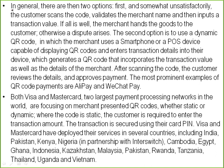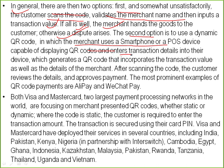In general, there are two options. In the first option, the customer scans the code, validates the merchant's name, and inputs a transaction value. If all is well, the merchant hands goods to the customer; otherwise, a dispute arises if the notification is not sent. The second option is to use a dynamic QR code, in which the merchant uses a smartphone or POS device capable of displaying QR codes, enters transaction details into the device, which generates a QR code that incorporates a transaction value as well as the details of the merchant. After scanning the code, the customer reviews the details.